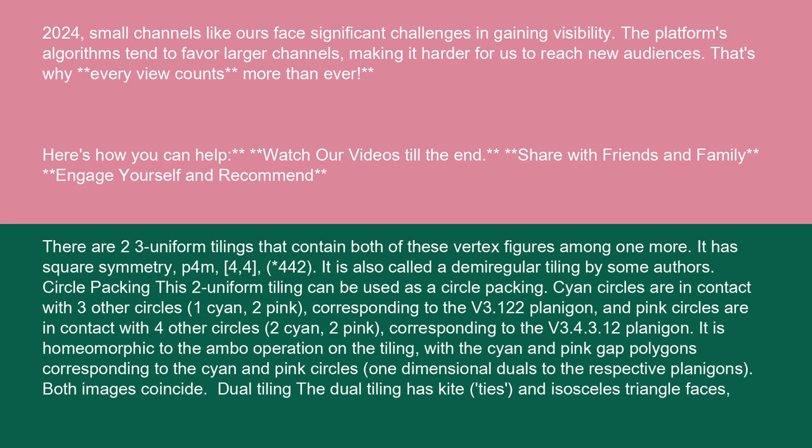There are two three-uniform tilings that contain both of these vertex figures among one more. It has square symmetry, P4M, 4-4-2. It is also called a demi-regular tiling by some authors.